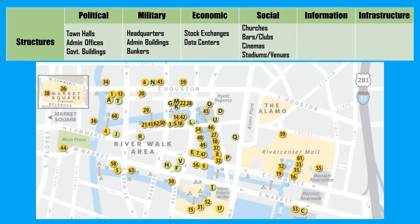Moving on to social structures — things like churches, bars and clubs, cinemas or movie theaters, large auditoriums, even stadiums. Really any physical structure that is primarily used for social reasons. We can list these in order to avoid striking them, or to eventually strike them. Specific locations like individual buildings are also preferable for intelligence collection — it's easier to get drone footage of a specific building than to scan an entire public park, and easier to park a surveillance van outside of a church than to surveil an entire district.